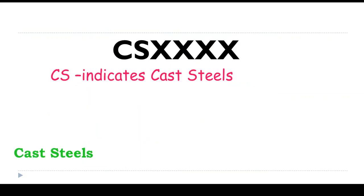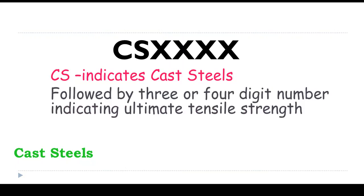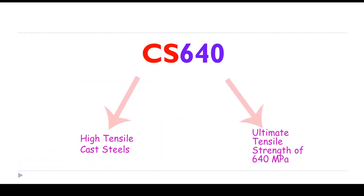Cast steel: all the digits after CS indicates ultimate tensile strength. CS640 means CS indicates cast steel and 640 means ultimate tensile strength of 640 Newton per mm².